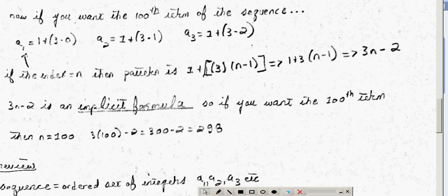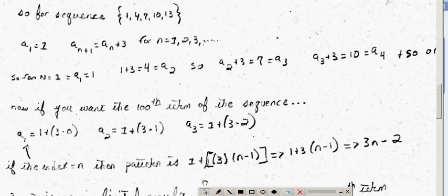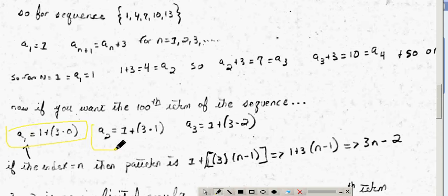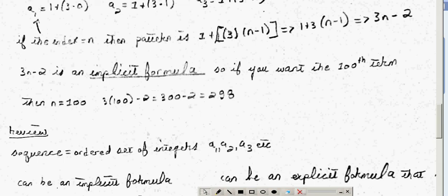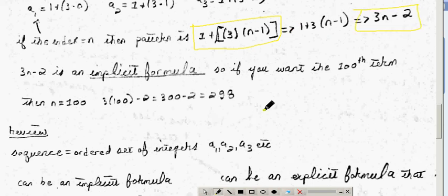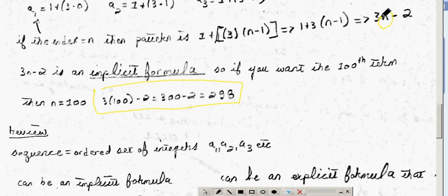If you want the hundredth term of the sequence, you need an explicit formula. Looking at the pattern 1, 4, 7, 10, 13, you'll see it's 1 plus 3 times (n minus 1). If you distribute out, you end up with 3n minus 2 — that's the explicit formula, used to find the nth term directly. So if you wanted the hundredth term, you'd just plug in 100: 3 times 100 minus 2 is 298.